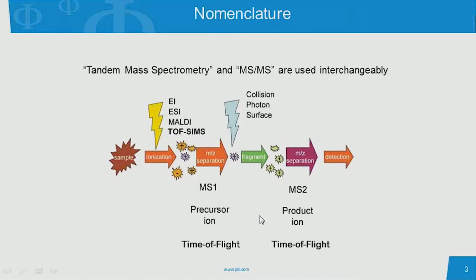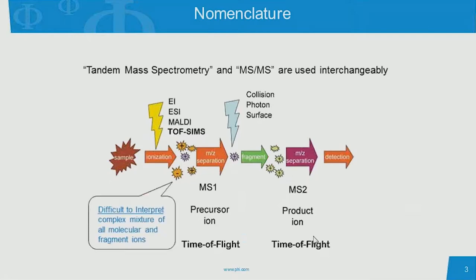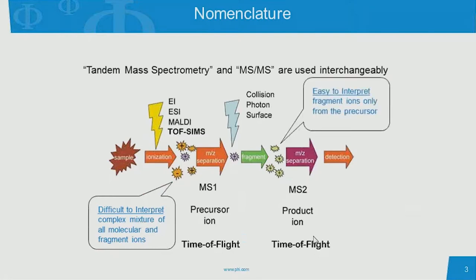In our particular implementation, we use a time-of-flight mass spectrometer for MS-1 and a time-of-flight mass spectrometer for MS-2 — so our technique is a TOF-TOF tandem mass spectrometry. The overall message of my seminar is that this complex mixture of ions formed off your sample is difficult to interpret; it's all the molecules and all the fragments added together in the TOF-SIMS spectrum. Once we do MS-MS, we have a dramatically easier spectrum to interpret, because the fragment ions are only from a single mass chosen from the TOF-SIMS spectrum.